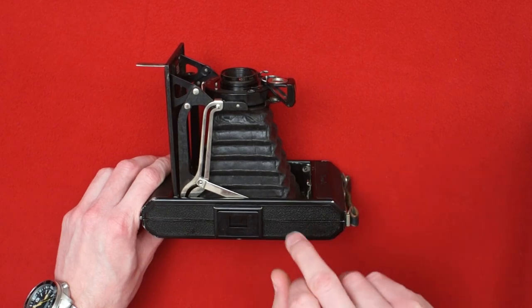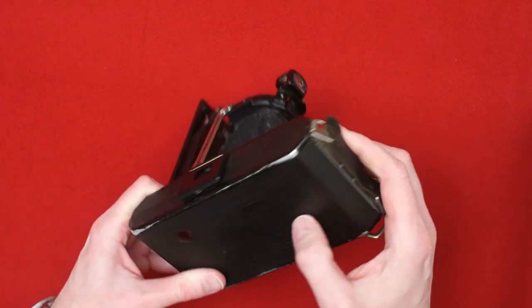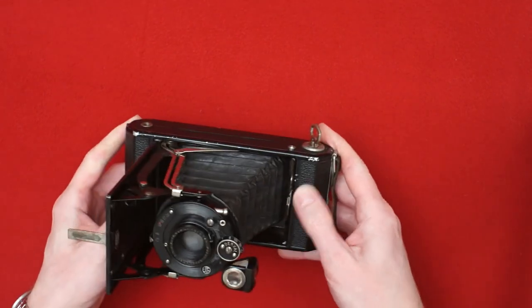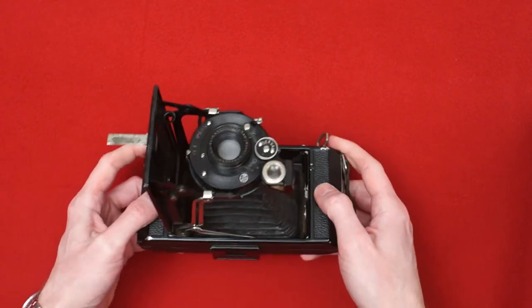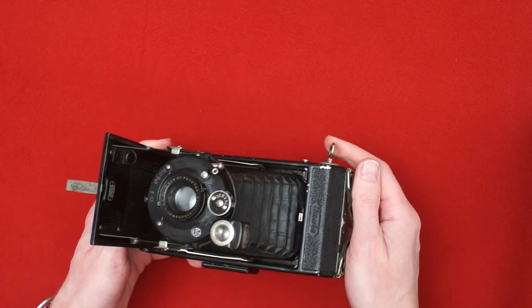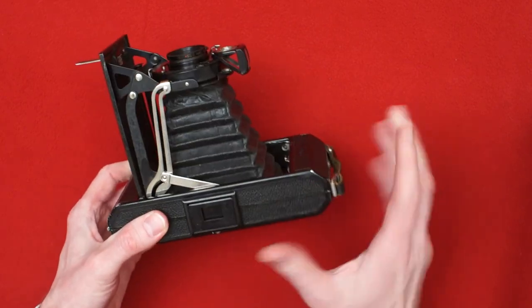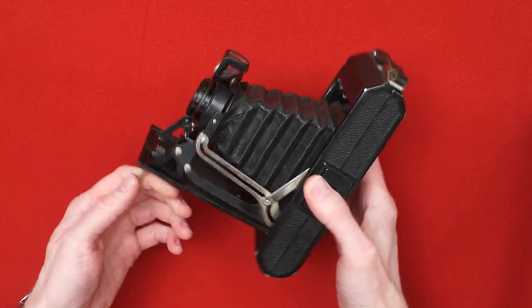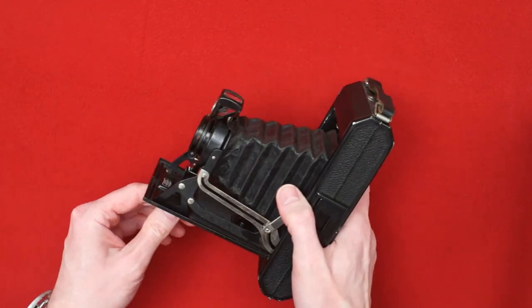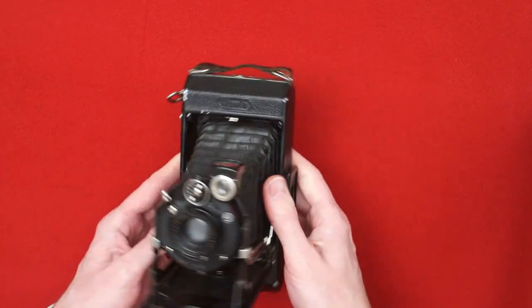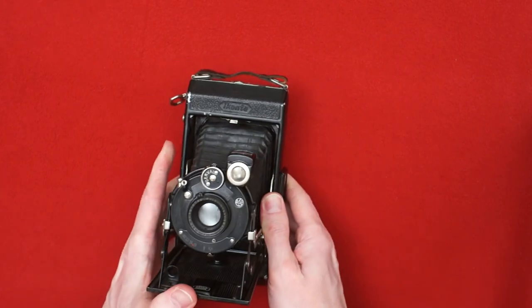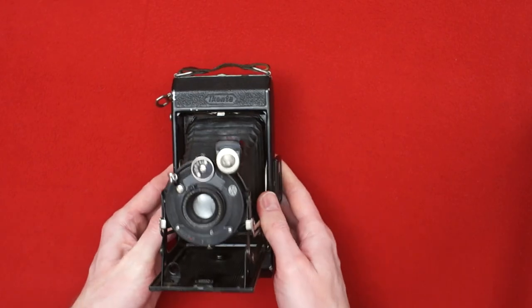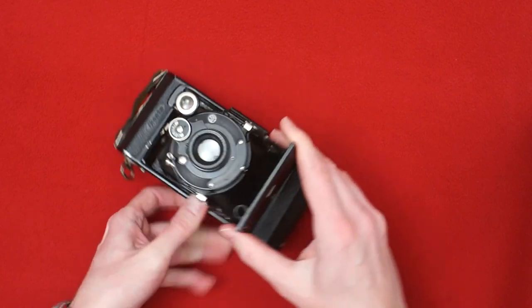But the East German company lost the rights to the Iconta name. So they produced a very similar camera after the war that was called Ercona. But otherwise very similar, apparently also of very good quality. So if you find one, buy it. It's not really any worse than the West German counterparts.